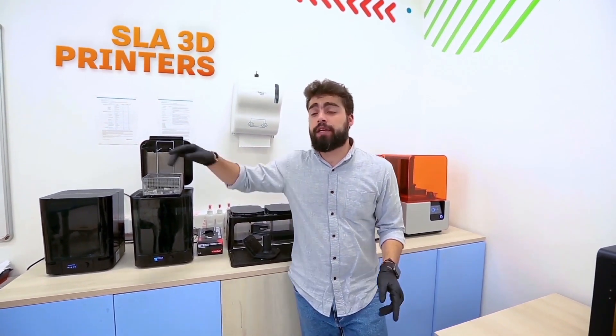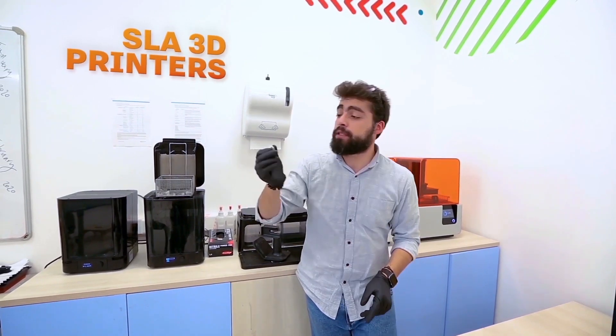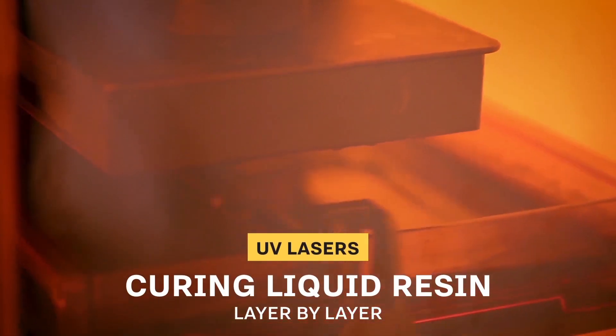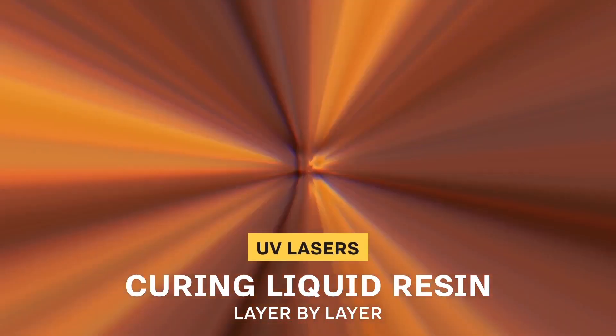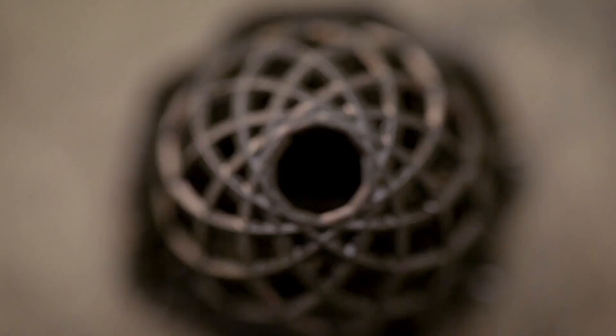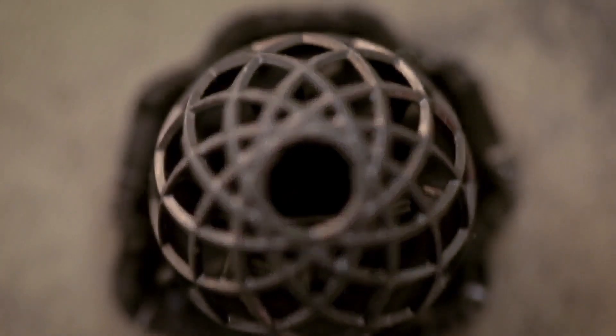We also have SLA 3D printers. SLA 3D printers are used to produce high-quality, high-resolution prints using various materials. Those magic boxes are equipped with UV lasers that cure liquid resin layer by layer. This allows us to create irregular shapes that cannot be made using traditional manufacturing methods.